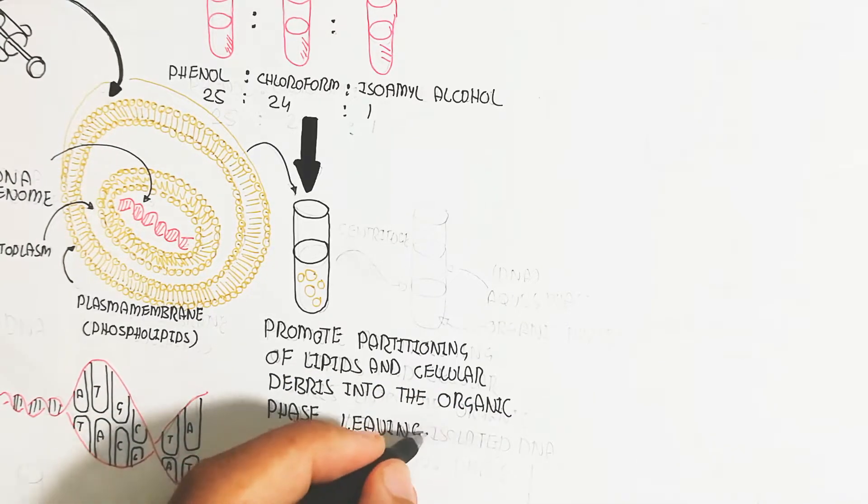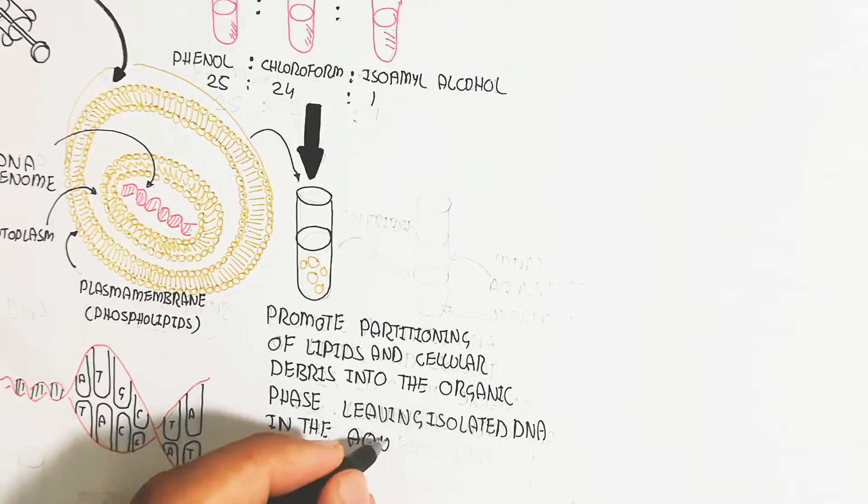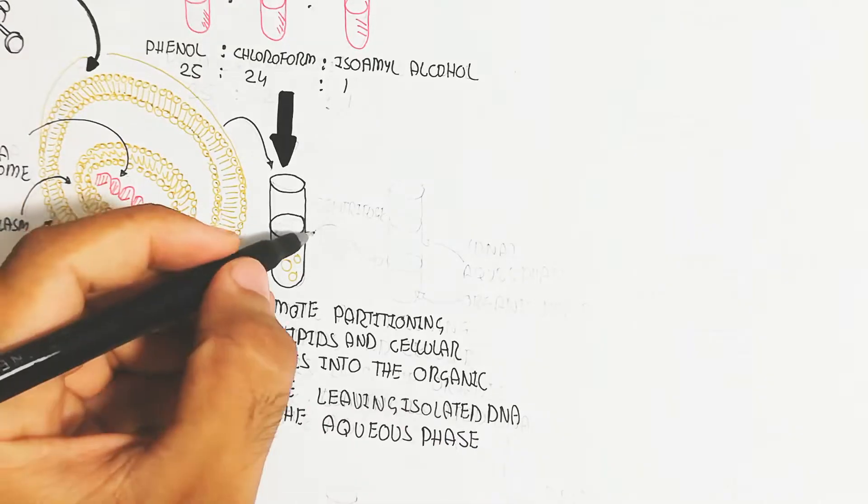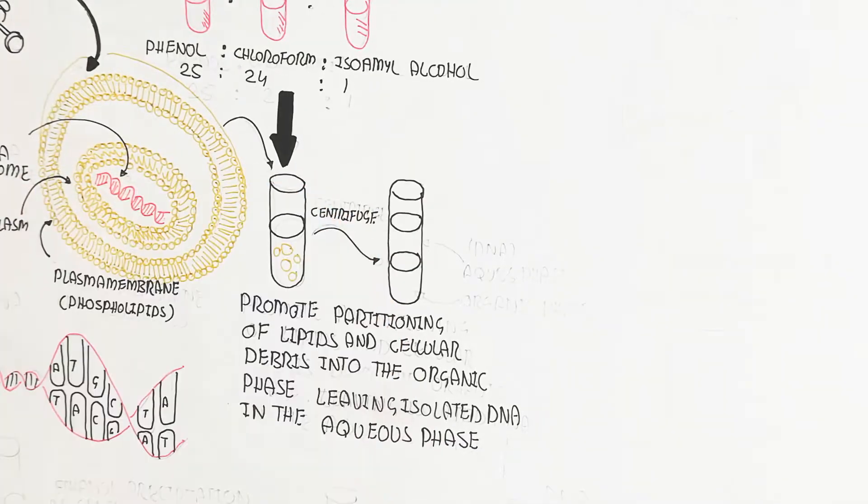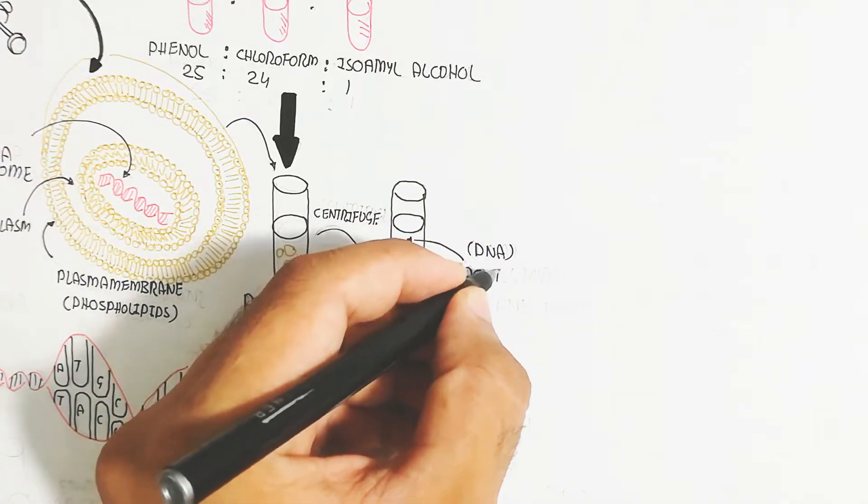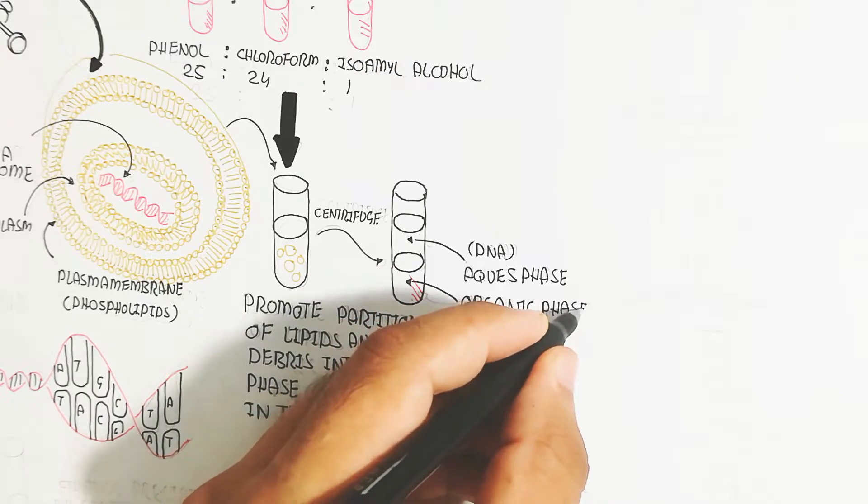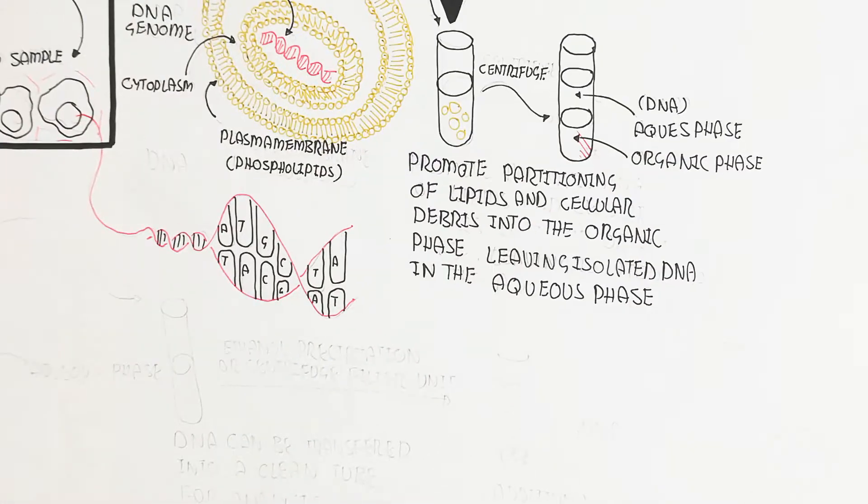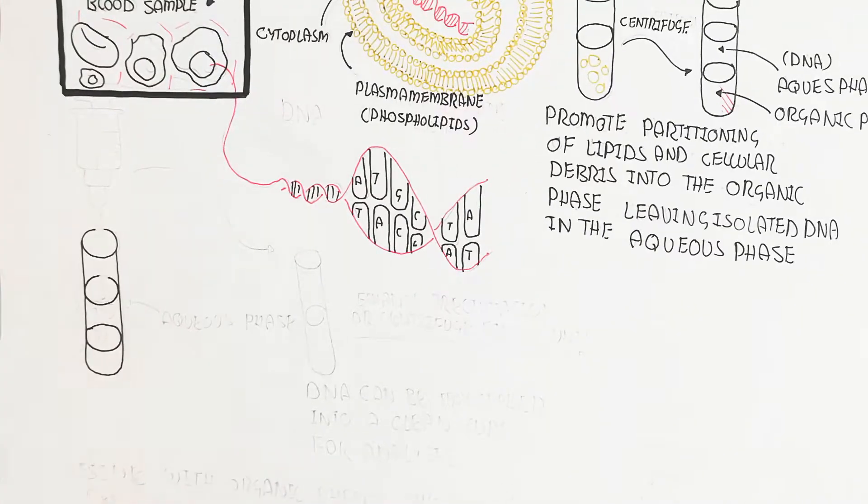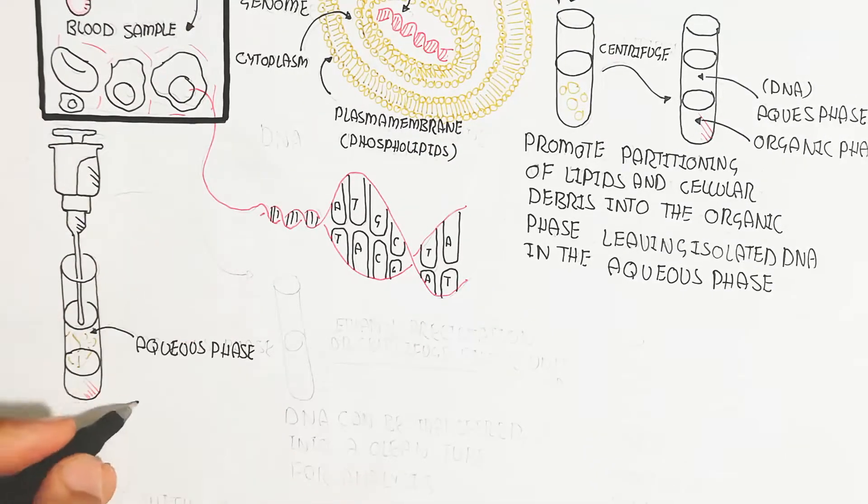DNA will not digest while other debris can be digested. After this process, centrifugation will be used. The centrifuge will separate the two phases - aqueous phase and organic phase. The aqueous phase contains DNA because it's a light molecule, while the organic phase contains cellular debris like bilayer phospholipids and organelles.